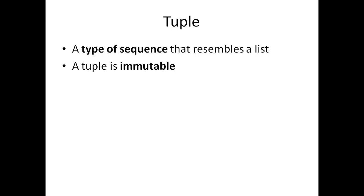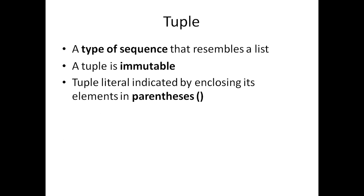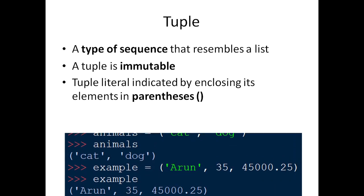We can change a list. But in the case of a tuple, it is immutable — we cannot change the contents inside the tuple. A tuple literal is indicated by enclosing its elements in parentheses. In the case of list we used square brackets, but here we have to use parentheses. Instead of square brackets, we will be using parentheses to denote it as a tuple.